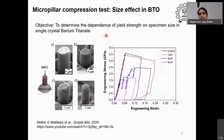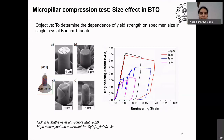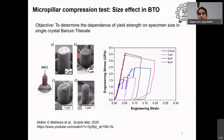Our objective is to determine the dependence of yield strength on specimen size in this single-crystal barium titanate material. We have taken four different sizes of pillars using focused ion beam machining — a micro-machining technique — at five microns, two microns, one micron, and 0.5 micron. All of them have been deformed, and you can see bands in all samples, but there are also cracks in the larger samples, some crack initiation in the intermediate sample, and no cracks in the smaller samples.